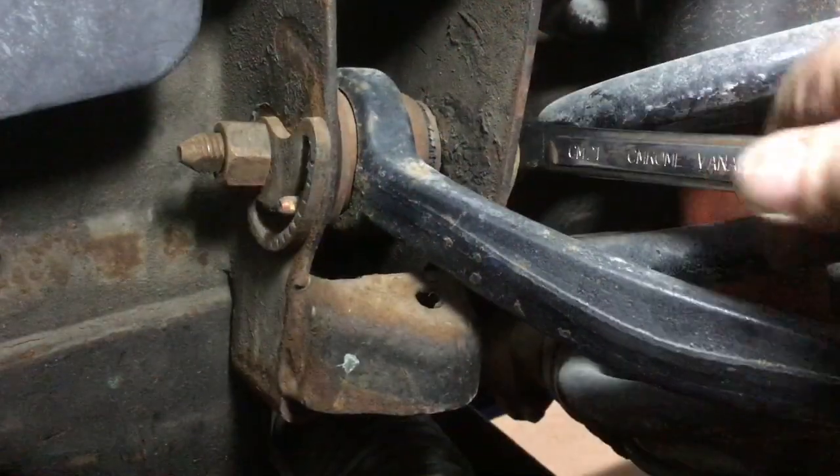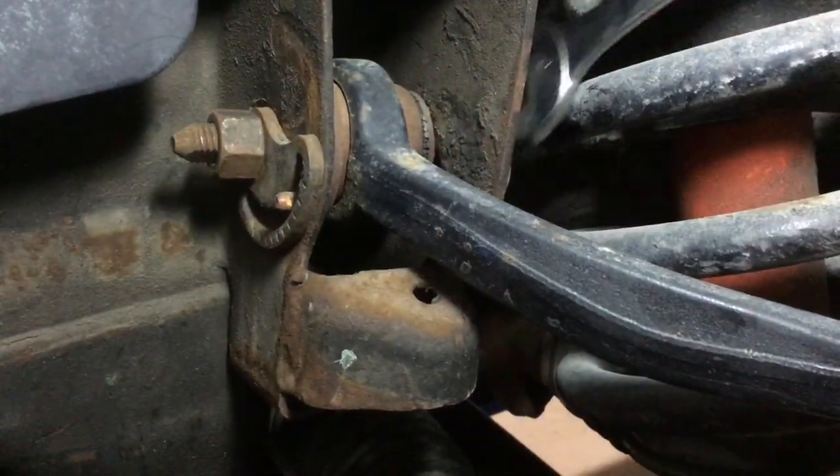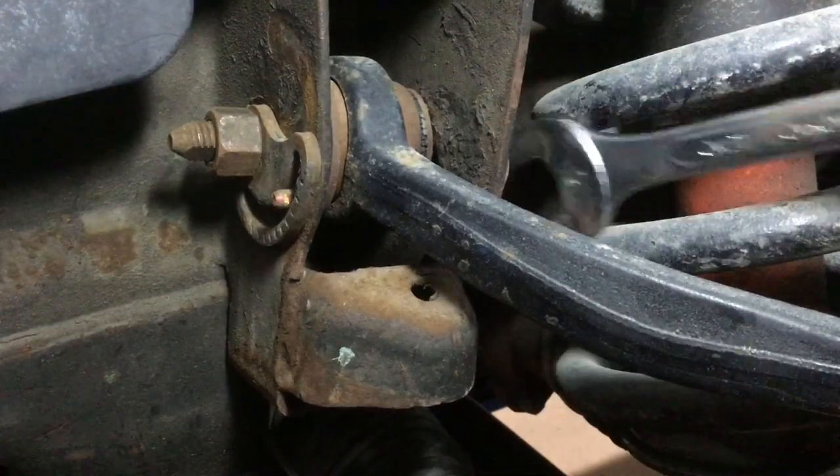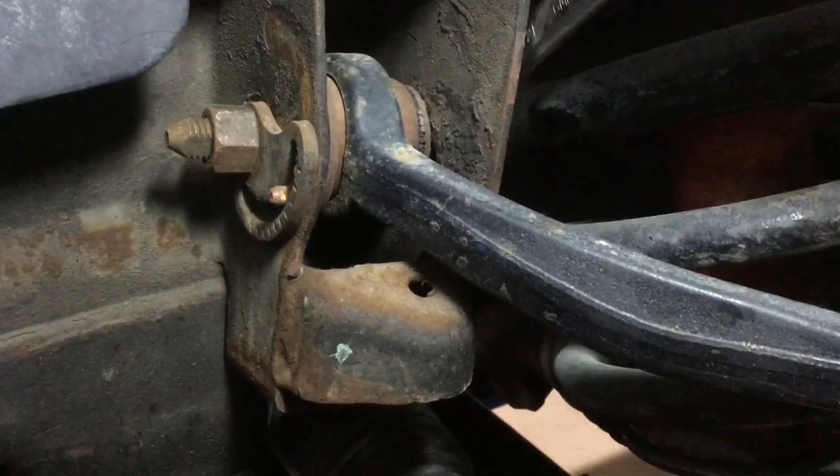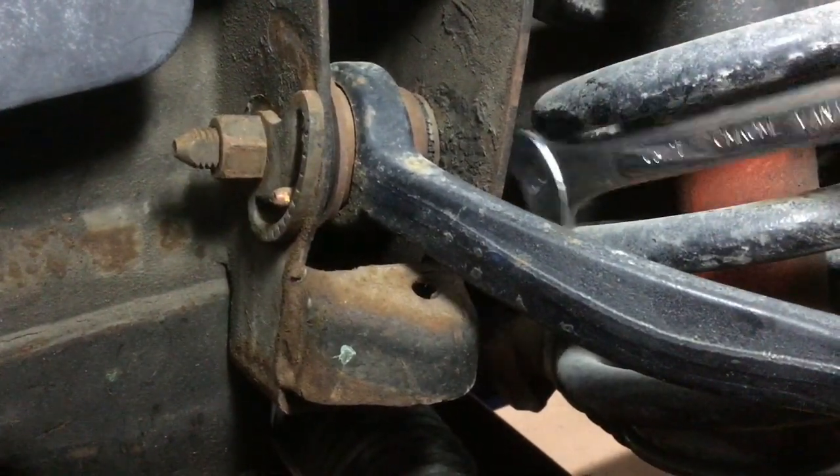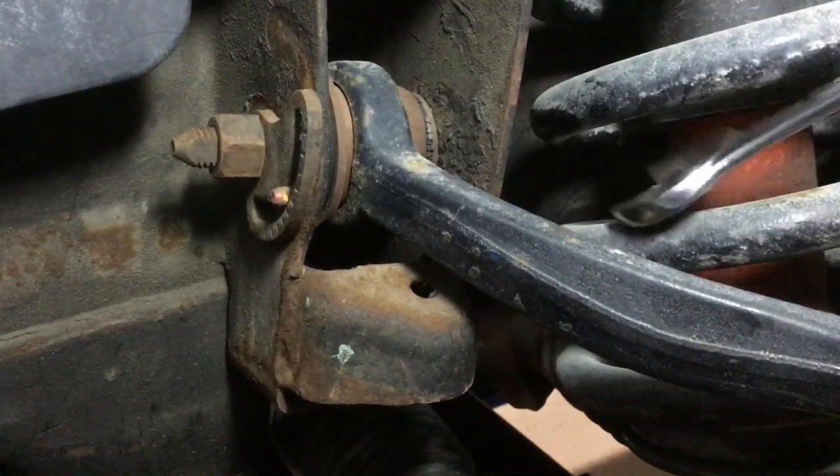Rob is continuing to make the adjustments on this upper control arm. Here you can see the eccentric moving, and as the eccentric moves it does move that control arm substantially, which adjusts the camber but also adjusts the caster as the front and rear of the control arm move separately.